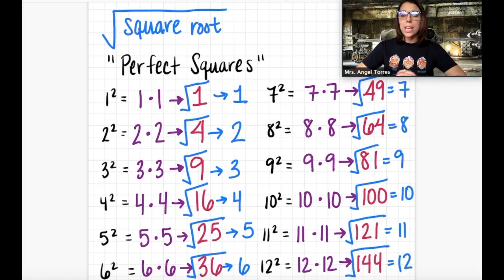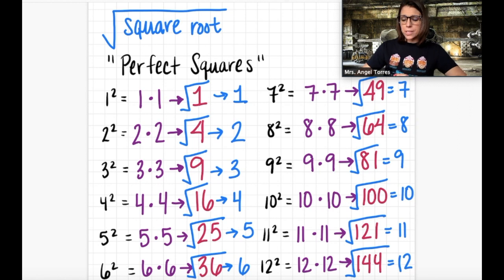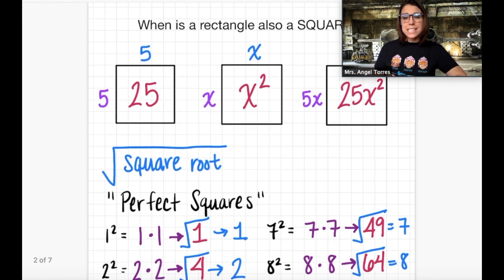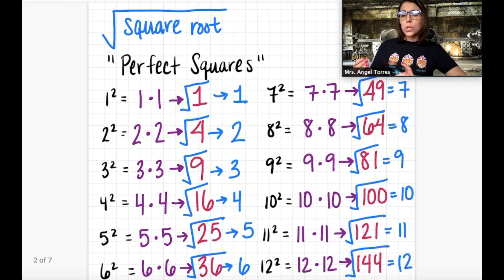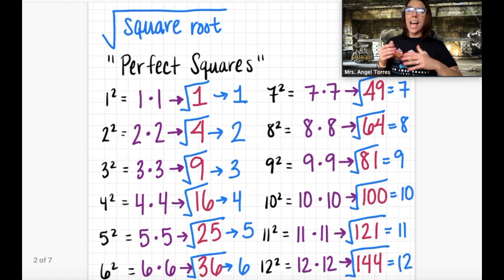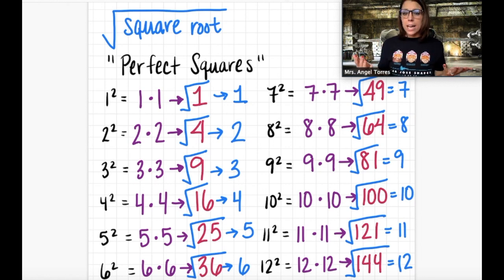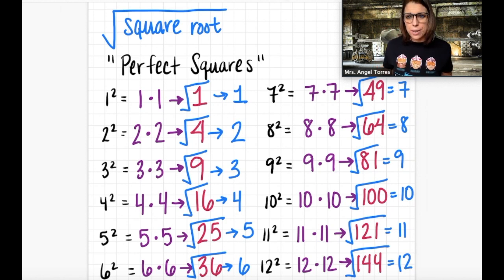Just to recap: a perfect square is the result of squaring two numbers. These come from having the same length and the same width in a rectangle. So when you're asked to find a square root, consider that like asking to find the length and the width of a rectangle whose area is a specific perfect square. That's it for today's lesson. I will see you next time.